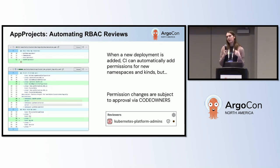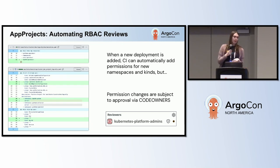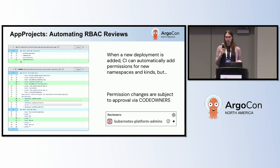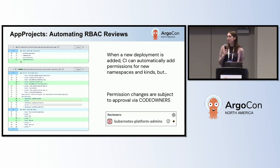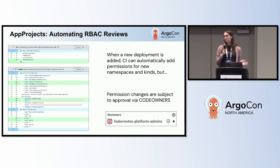If a team generates a PR that deploys a new HTTP route, we can detect that in CI, append the change to the app project — which will inherently require admin approval of the change — and automate this process for keeping these changes in sync.